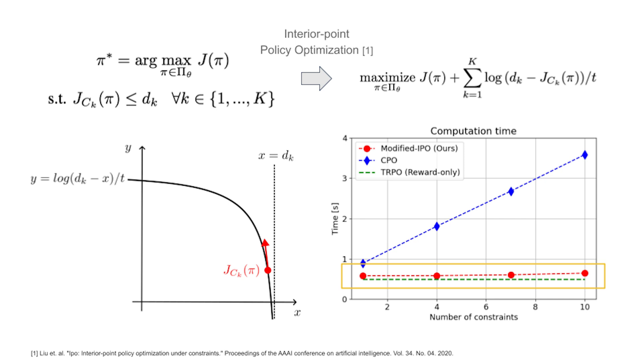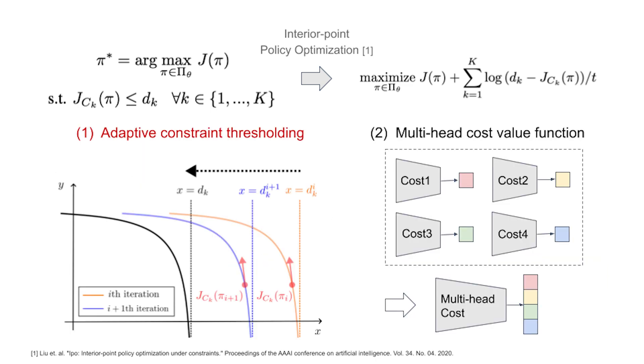However, as the framework targets complex robotic systems, two algorithmic improvements are incorporated for scalability when dealing with numerous constraints. First, an adaptive constraint thresholding method is used to appropriately set the constraint limits based on the performance of the current policy and gradually guide the policy to the constraint satisfying region.